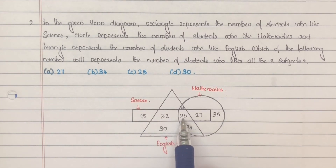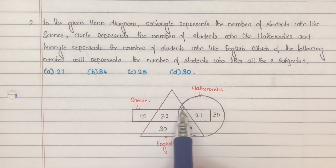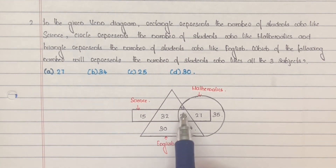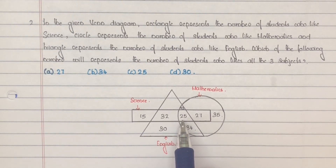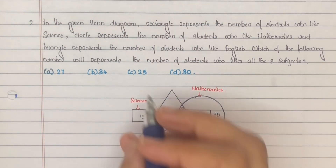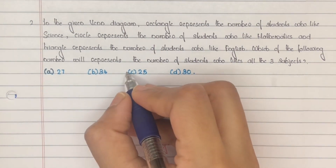Next, this 25 — 25 is a part of the rectangle, circular, and triangle portion. This 25 is a part of all three figures, which means 25 students like all three subjects. So the answer is option C.